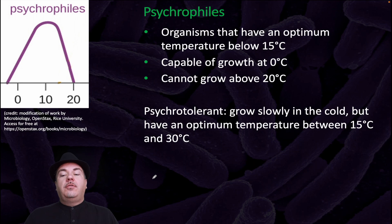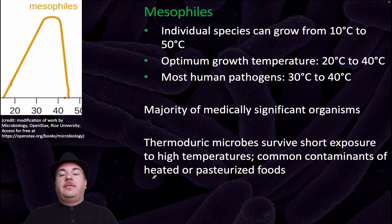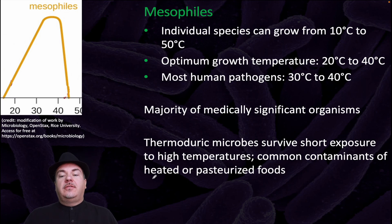Psychrotolerant organisms grow slowly in the cold but have an optimum temperature between 15 and 30 degrees Celsius. Mesophiles contain individual species that can grow from 10 to 50 degrees Celsius, with optimum growth temperature between 20 and 40 degrees Celsius. Most human pathogens, which are mesophiles, grow between 30 and 40 degrees Celsius — which makes sense given that the human body temperature is 37 degrees Celsius.